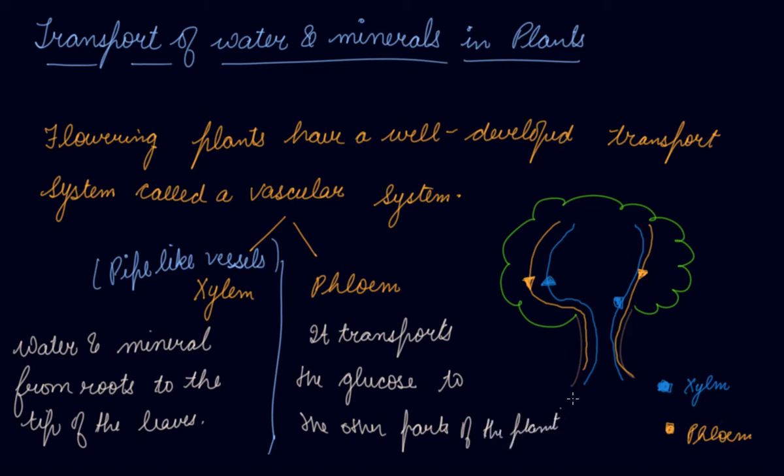In xylem the movement is from the root to the leaf and to the tip of the leaves. In phloem your movement is from the leaves to the roots and to the various parts of the plant.